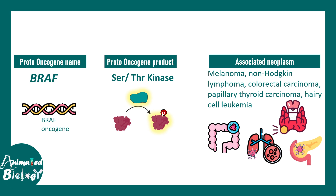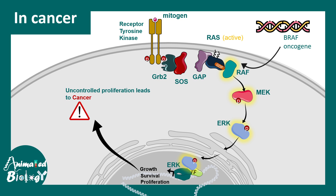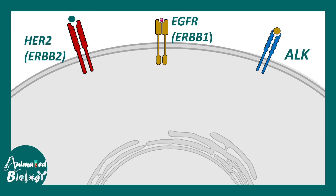The same principle applies to BRAF, a serine-threonine kinase whose job is to phosphorylate downstream effectors. It is associated with melanoma, non-Hodgkin's lymphoma, colorectal carcinoma, and other cancers. Just like RAS mutations, the BRAF oncogene leads to constitutive activation of BRAF kinase. Even in the absence of growth factors, all downstream pathways remain active because RAF is mutated, leading to uncontrolled growth, proliferation, and ultimately cancer.